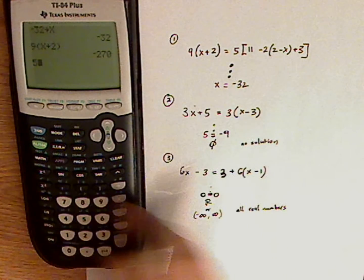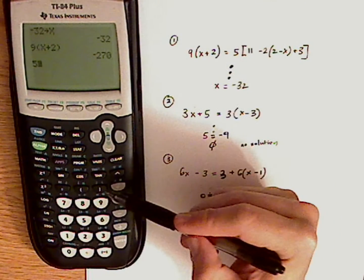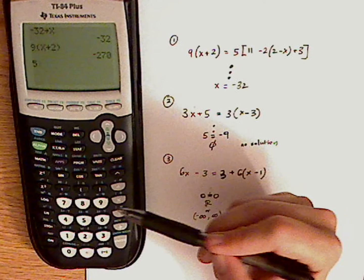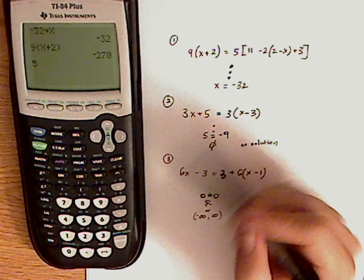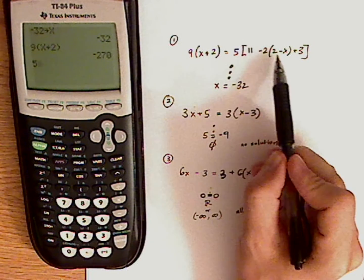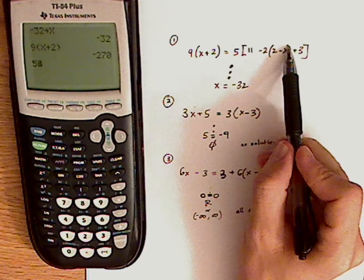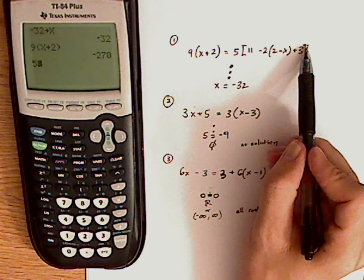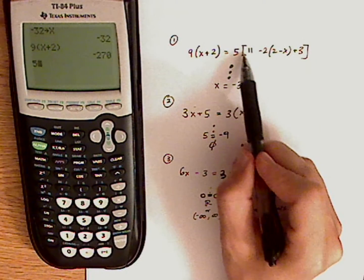So 5. Now your calculator doesn't have brackets, so just use parentheses. This would be an open parentheses. This would be another open parentheses. And you close it. And then the second close would close the bracket.